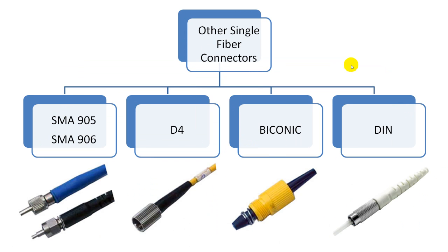There are also some legacy single fiber connectors. The most common are the SMA connectors, developed by Amphenol — SMA stands for Sub-Miniature version A. It has a 3.14 mm ferrule. The difference between the SMA905 and SMA906 is that the SMA906 connector's ferrule has a step, while the SMA905 has a full complete ferrule with no steps. SMA906 connectors are most commonly used in medical and industrial applications.